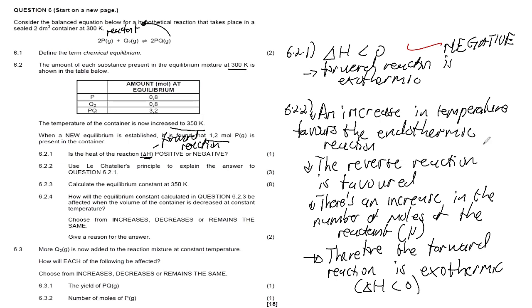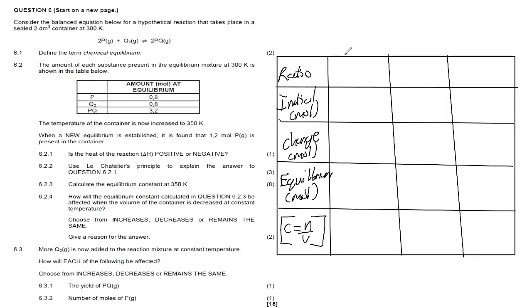Now when it comes to calculating Kc, note that P, Q, and PQ are not actual elements from the periodic table — these are hypothetical unknowns. Also note: this question is moving from a previous equilibrium to a new equilibrium, not starting from the very beginning where products equal zero. So for the initial number of moles we must use the moles from the previous equilibrium.